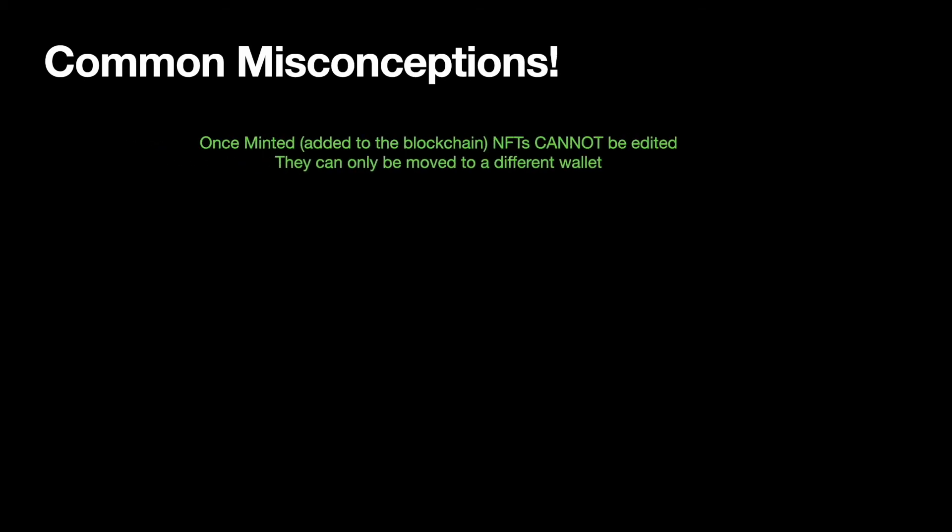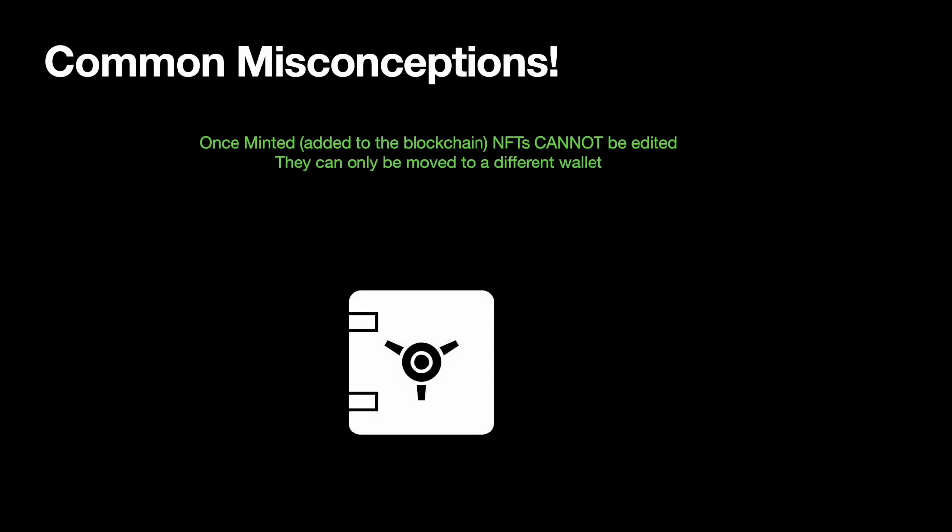The second misconception is that people often think once an asset is minted it can be edited. That is not the case. Once minted — and minting means literally putting it on the blockchain — it can never be edited, ever, at all. The only change you can make is that it could be moved to a different wallet or traded, but the underlying asset itself cannot be changed at all. They are immutable.